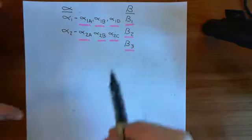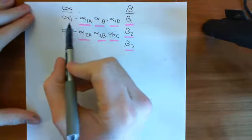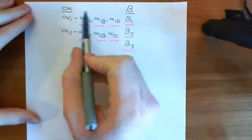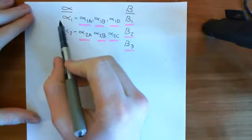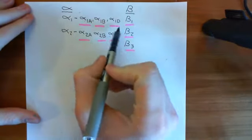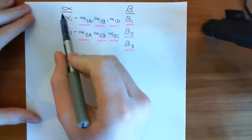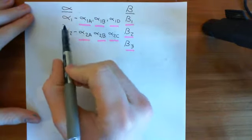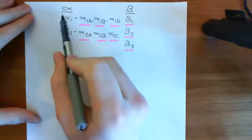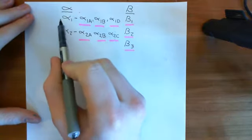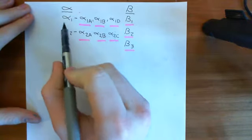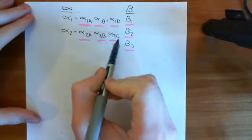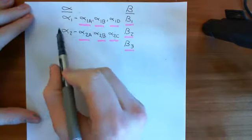We're going to treat all of these alpha-1 receptors as one, because as far as we can tell so far, they all seem to activate the same thing. Their localization is pretty much the same, so we'll treat them all together. The same applies for the alpha-2 receptors.